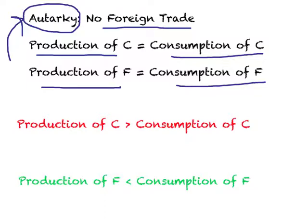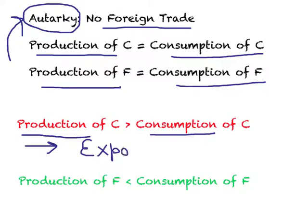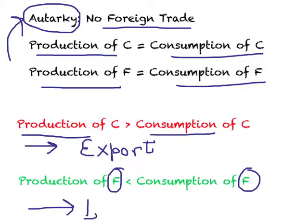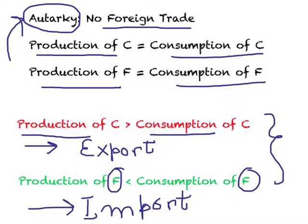When will foreign trade arise? It arises when a country produces more than it can consume — for example, more clothing — in which case it will export that item. Conversely, if a country produces less than it consumes — for example, food — it will import food. So autarchy breaks down when production and consumption of a good are no longer equal, leading to exports or imports.